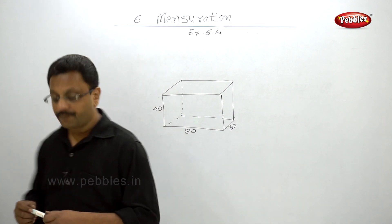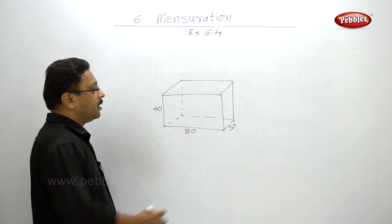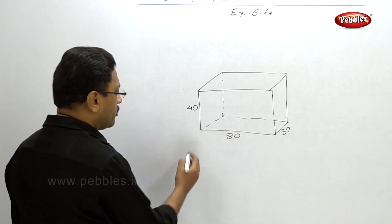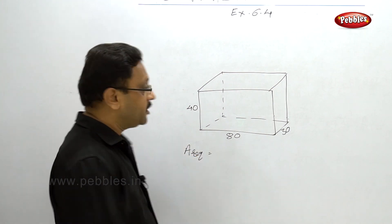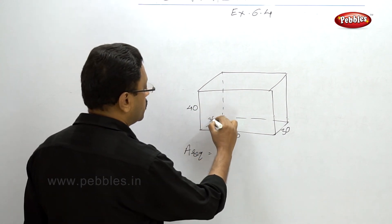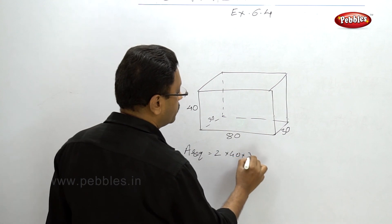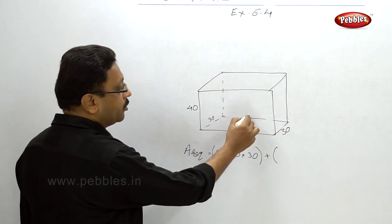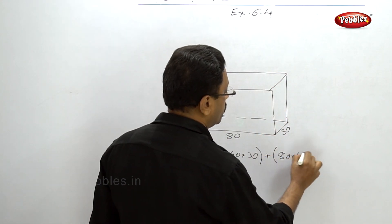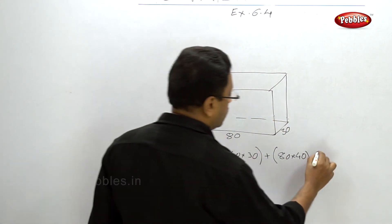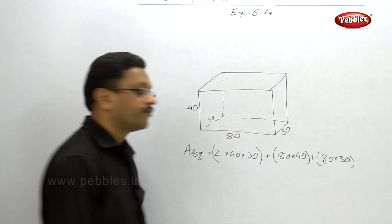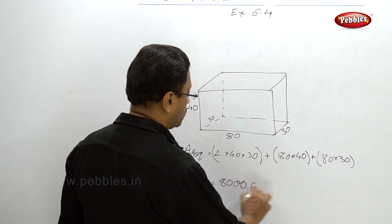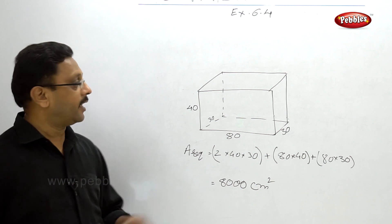Very simple: two side faces, one bottom face, and one back face. Area required = 2 × (40×30) for the two sides, plus 80×40 for the back, plus 80×30 for the base. Pause your video and calculate this. The answer is 8000 cm square — this much paper is required to cover those faces.